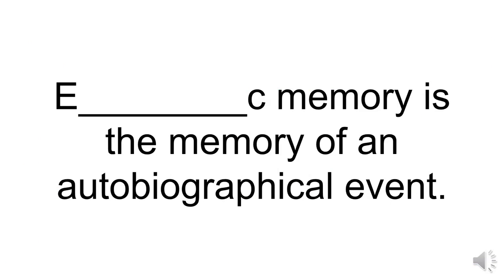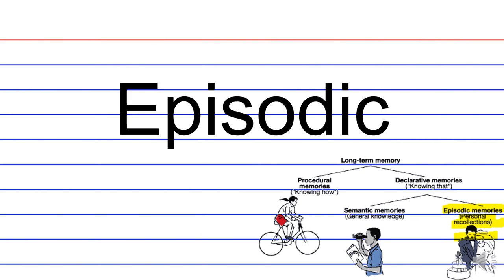E blank C memory is the memory of an autobiographical event. So what type of memory is this? That would be episodic memory.